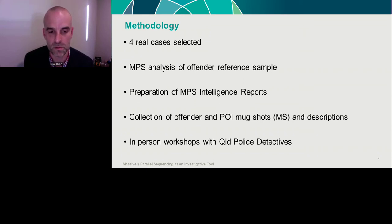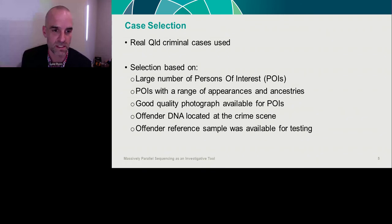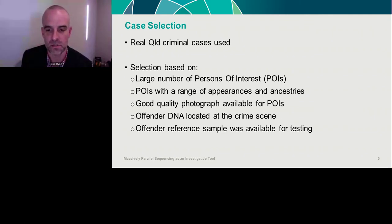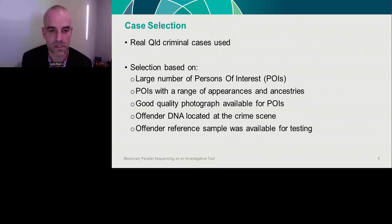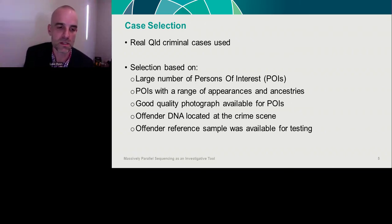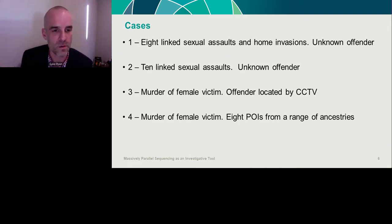We collected mugshot photographs of each offender and all persons of interest from the cases, along with physical descriptions. For some POIs we had multiple mugshots collected over years, and it was interesting that some physical descriptions weren't consistent with their mugshots. We then conducted in-person workshops with the detectives. The four cases we analysed were: eight linked sexual offences and home invasions with a large number of POIs; ten linked sexual offences over a shorter period; a murder of a female victim identified via CCTV, to test whether detectives could use NPS intelligence to compare with CCTV imagery; and a murder of a female victim with eight POIs from a range of ancestries.